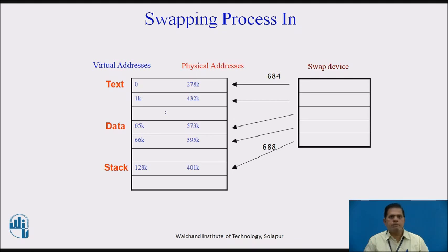When the swapper wakes up to swap processes in, it examines all processes in the state ready-to-run but swapped out, and selects the one that has been swapped out the longest. If enough free memory is available, the swapper swaps the process in, reversing the operation done for swapping out. It allocates physical memory, reads the process from the swap device, and frees the swap space. If successful, it searches for other processes to swap in and repeats the procedure, as shown in the algorithm.